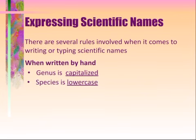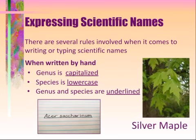Next, we'll talk about how we write these names. When we write scientific names by hand, the genus is always capitalized, but the species is always lowercased, and we have to underline them. For example, the scientific name for silver maple is Acer saccharinum. You guys will not have to memorize any scientific names, so don't worry about that — they will always be given to you. As you can see, the genus in this scientific name is Acer, the species is saccharinum, and the A in Acer is capitalized while the S in saccharinum is not.